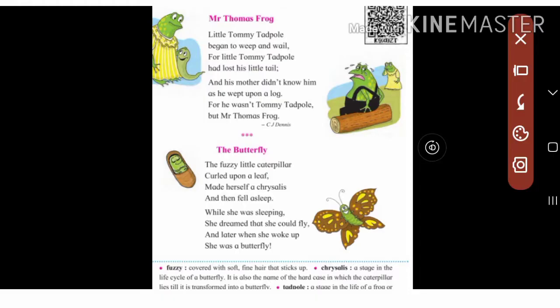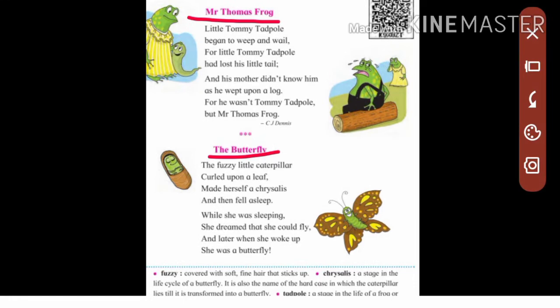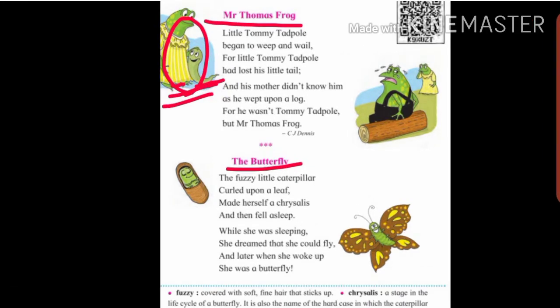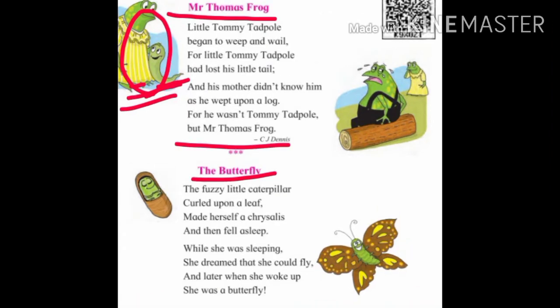The poem has two parts: the first part is 'Mr. Thomas Frog' and the second part is 'The Butterfly.' These two parts discuss the growth of the frog and the butterfly. As you can see in this picture, there is a mother frog and little Tommy Tadpole growing into an adult.